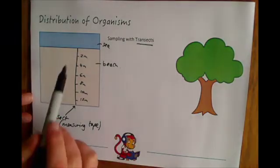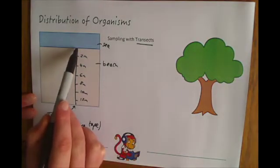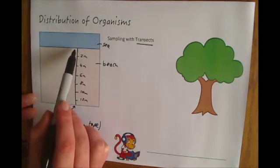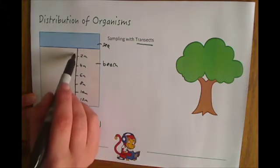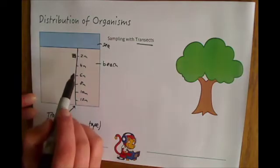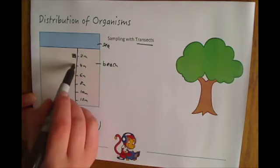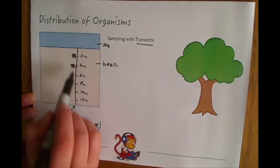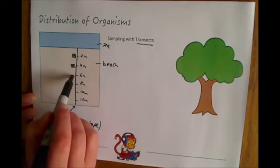What you do is start at zero, place your quadrat down, count the number of organisms there, then walk to two meters, count the organisms, walk to four meters, count the organisms there, and so on.